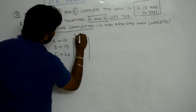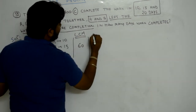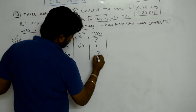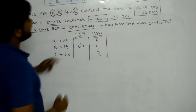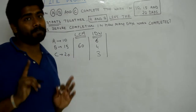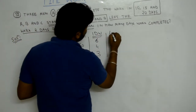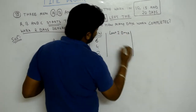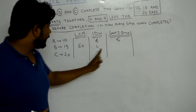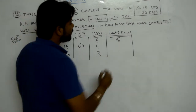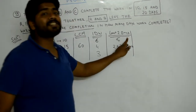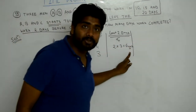We find the LCM of 10, 15 and 20, which is 60. One-day work: A is 6 units, B is 4 units, C is 3 units. In the last two days only C worked, completing 2 into 3, that is 6 units of work.